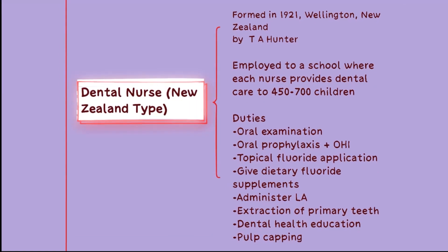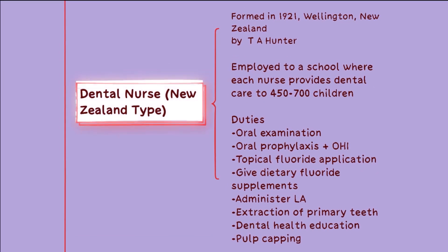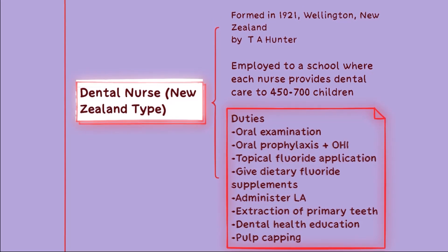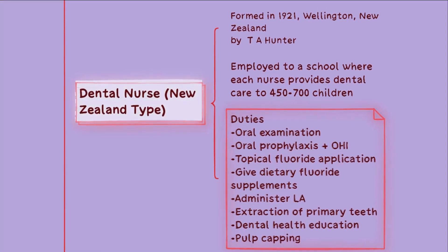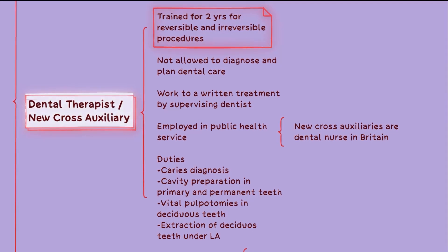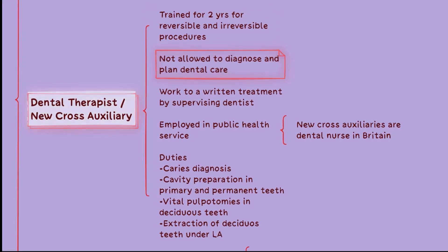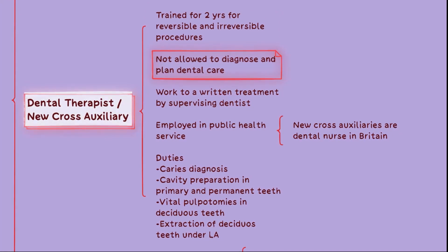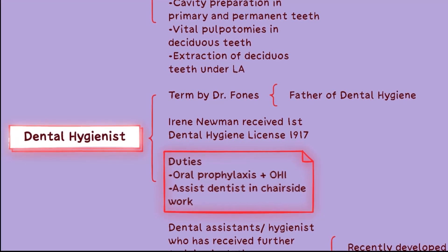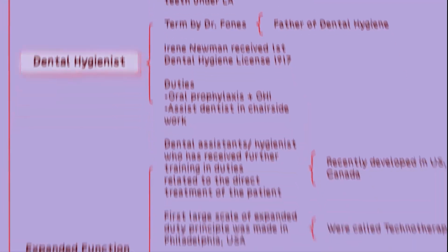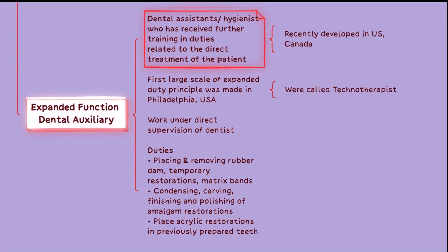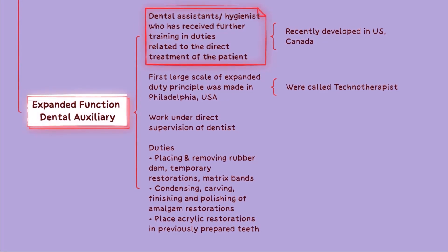Dental nurses, also known as New Zealand type dental nurses, provide dental care to children in schools including oral examinations, prophylaxis, fluoride application, and dental health education. Dental therapists, or new cross auxiliaries, are trained to perform reversible and irreversible procedures but cannot diagnose or plan dental care independently. Dental hygienists focus on oral prophylaxis, oral hygiene instruction, and chair-side assistance. Expanded function dental auxiliaries are dental assistants or hygienists who have received additional training to perform specific tasks related to patient treatment.